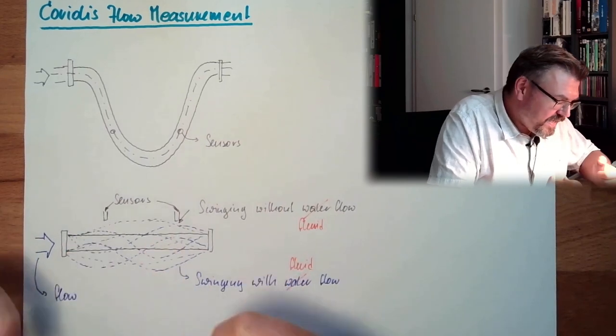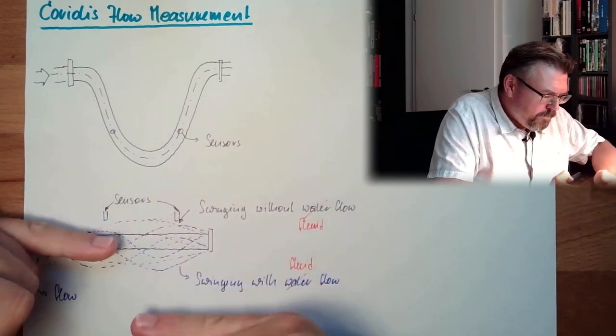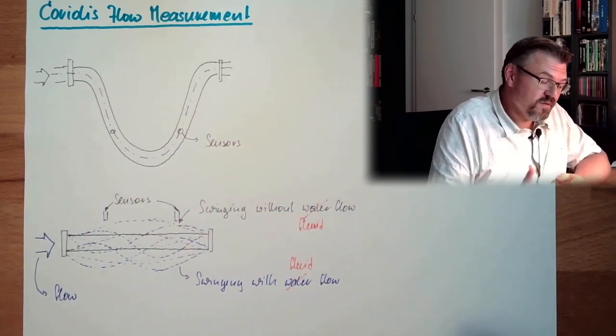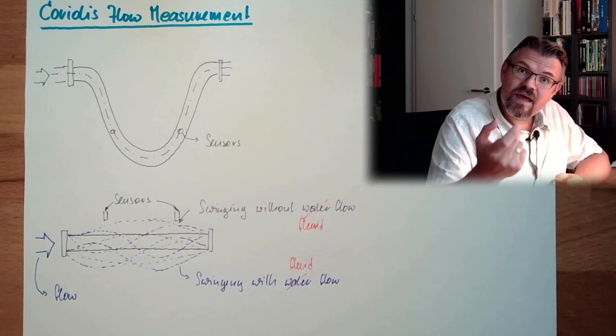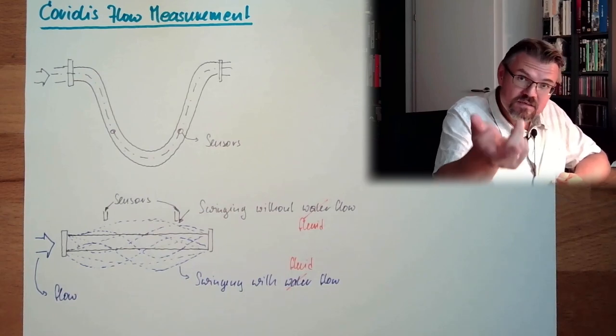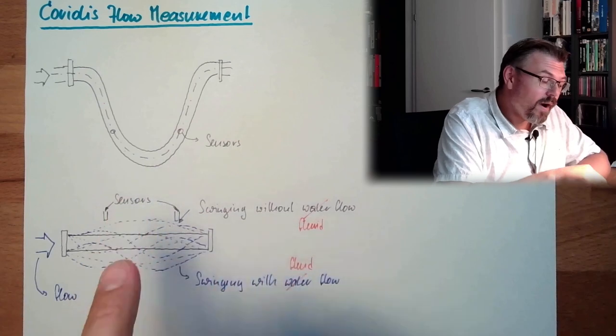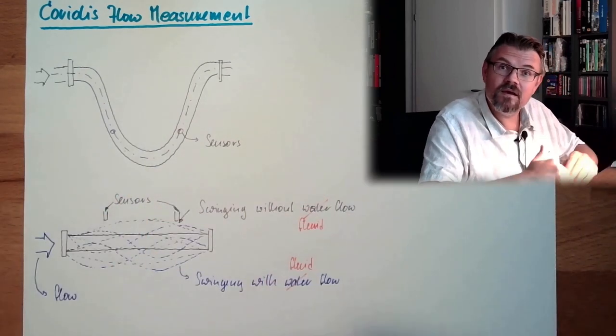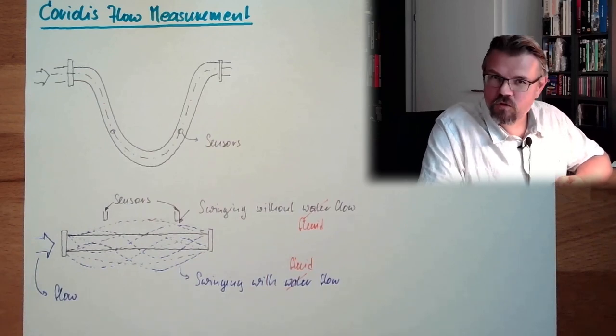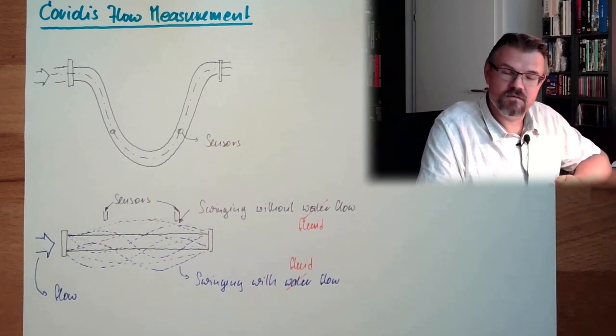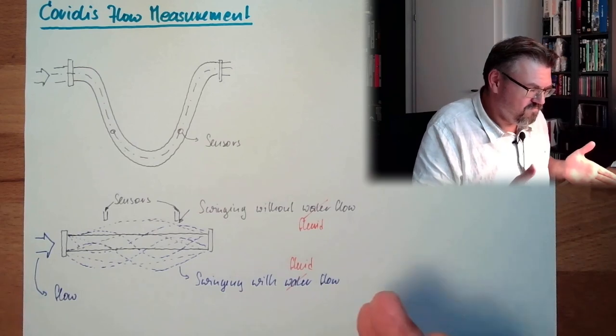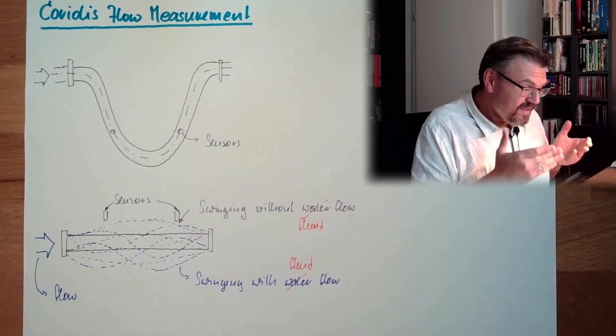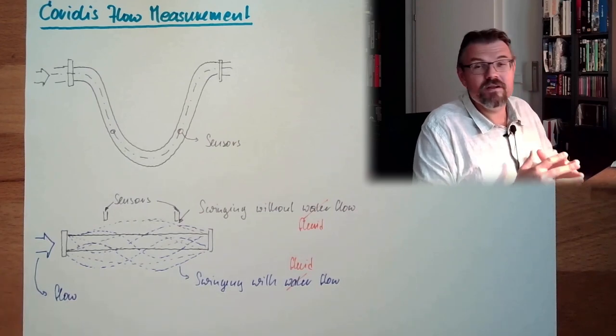And if we now look at the sensors and we are beep, beep, beep, beep, beep, we have a shift in the signals. And this timely shift in the signals is indicating how much disturbance there is in our smooth swinging, and this is indicating how much mass flow there currently is. So, this is the principle of Coriolis flow measurement.